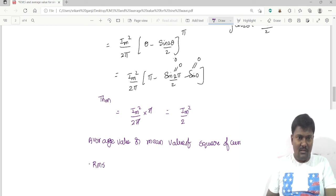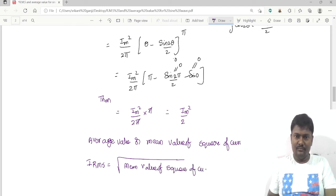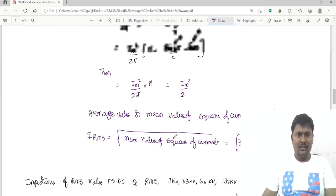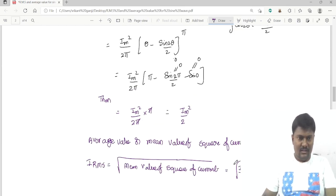What is RMS value? I_RMS is equal to the square root of this, I_m square by 2. So finally the answer is I_m by root 2, and RMS is equal to I_m by root 2.